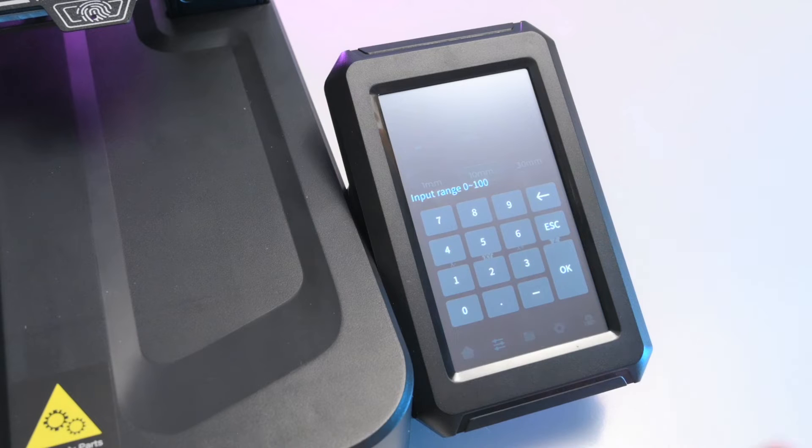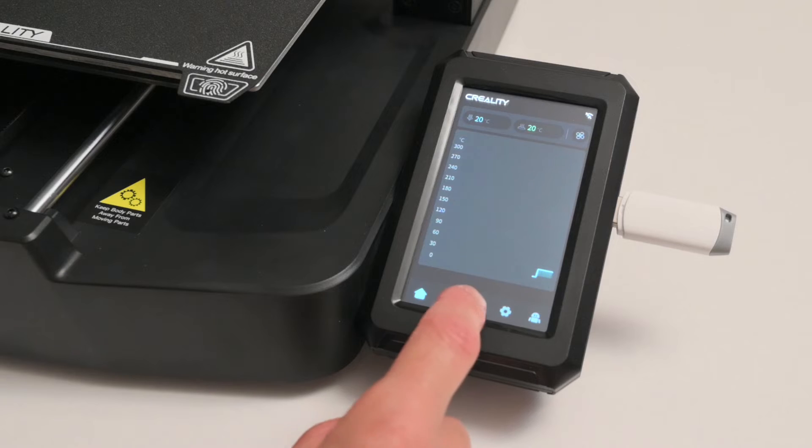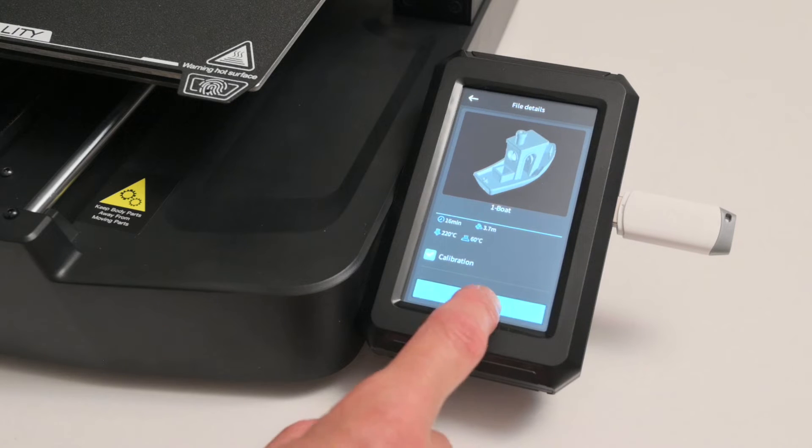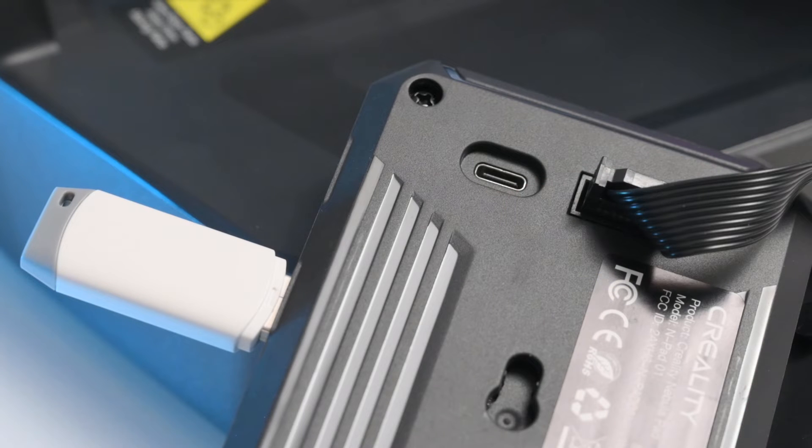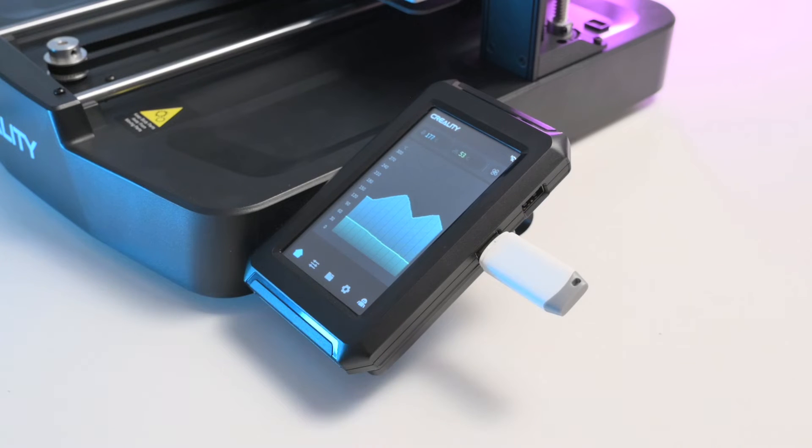The 4.3 inch colour touch screen is easy to use and the user interface is easy to navigate. The loaded models have diagrams that makes it easy to find and select a model for printing. On the underside of the display there's a USB-C port for connection and two USB slots on the side for loading files. This printer also has WiFi which means files can be sent directly from the slicer software.